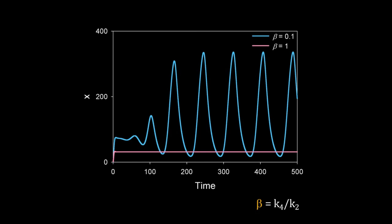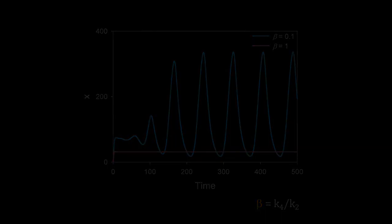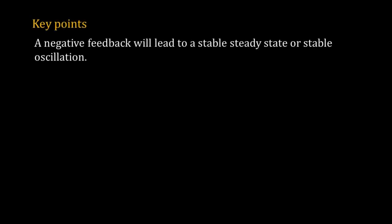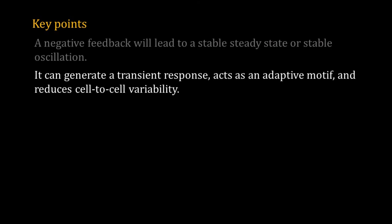Here are the key points of this video: A negative feedback will lead to a stable steady state or stable oscillation. It can generate a transient response, act as an adaptive motif, or reduce cell-to-cell variability.